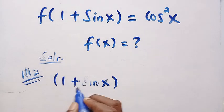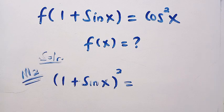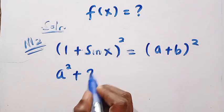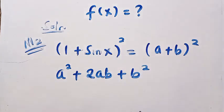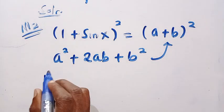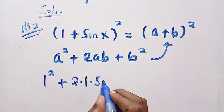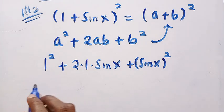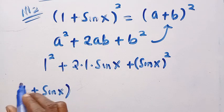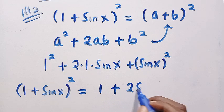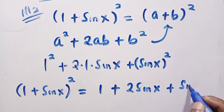I want to take the square of one plus sine x and expand it. Comparing with the formula for a plus b raised to the power of two, which expands to a squared plus two a b plus b squared, where a equals one and b equals sine x, we get one squared plus two times one times sine x plus sine x squared, which equals one plus two sine x plus sine squared x.